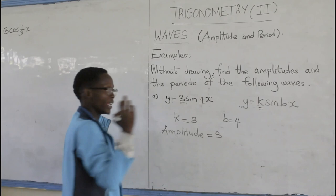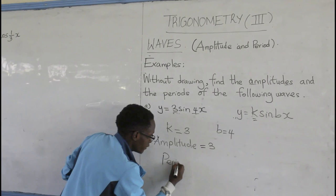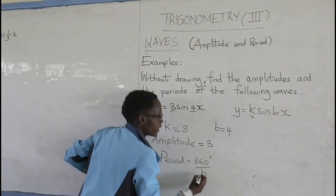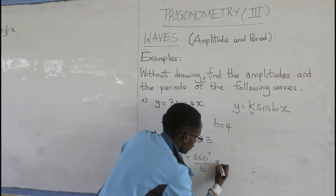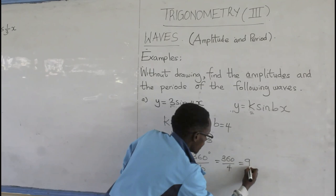Which stated that the period is given by 360 degrees divided by the value of B. And remember that the value of B in our case was 4. So, the period is going to be given by 360 divided by 4, which is 90 degrees.